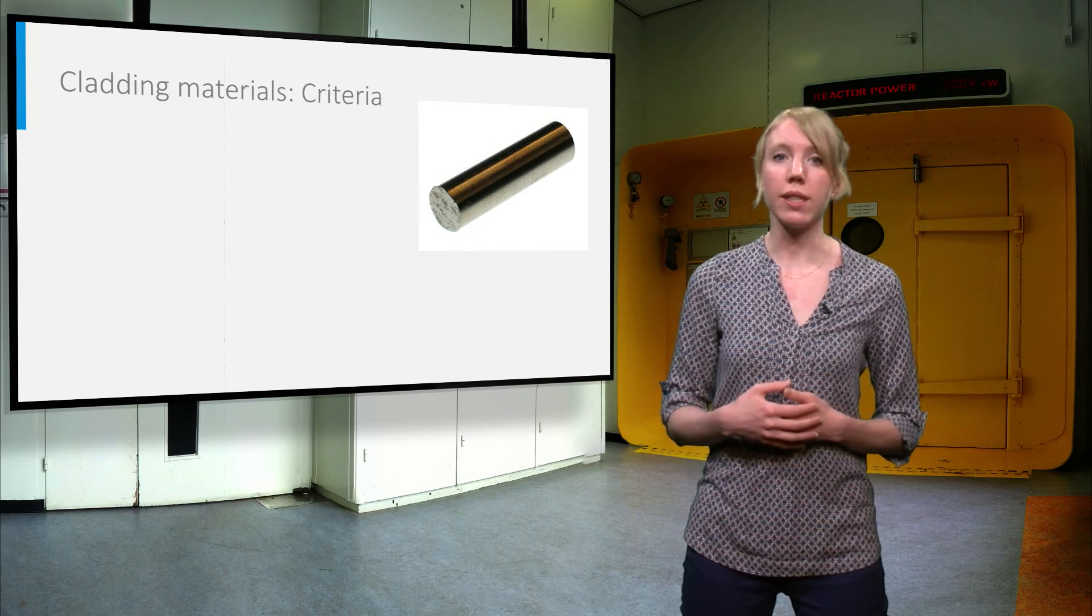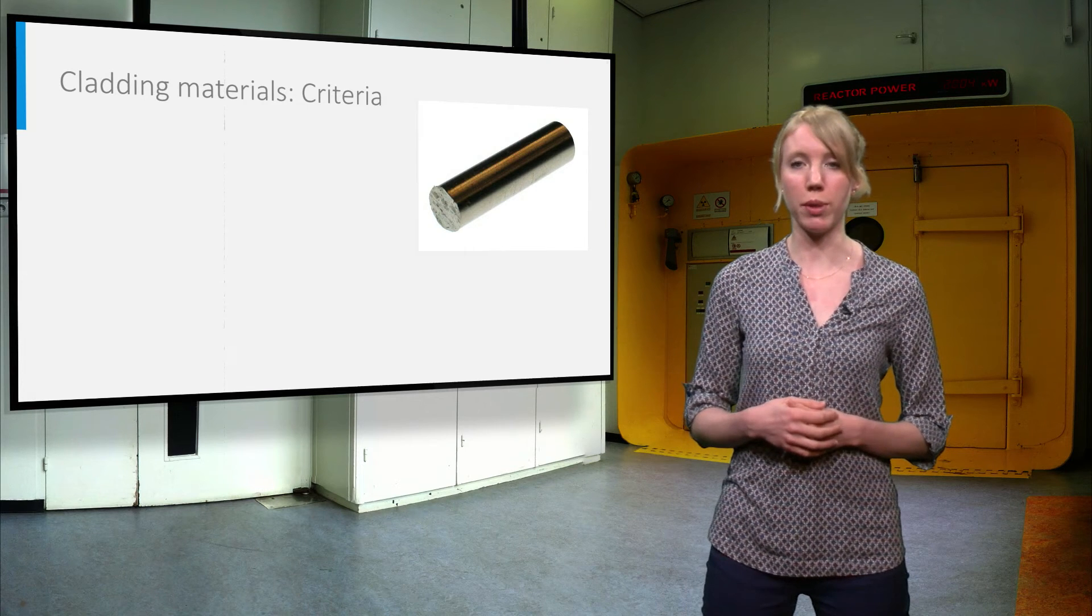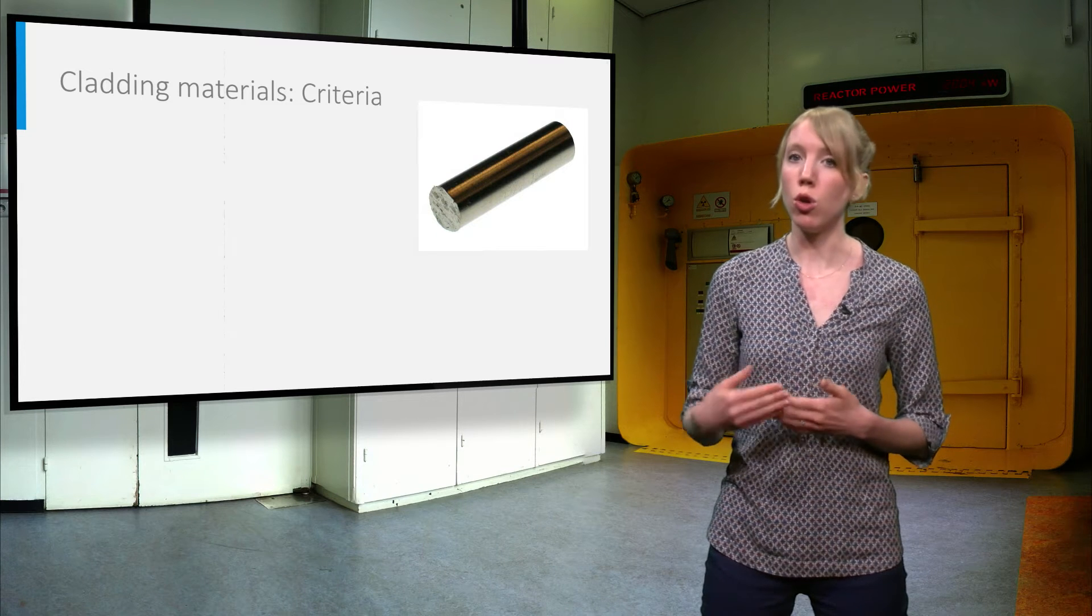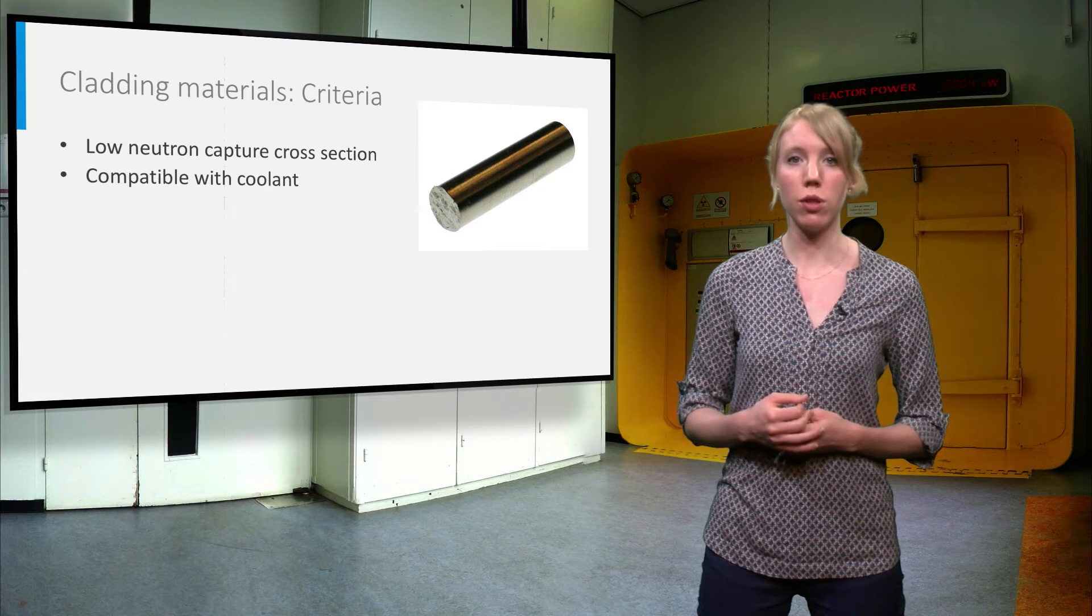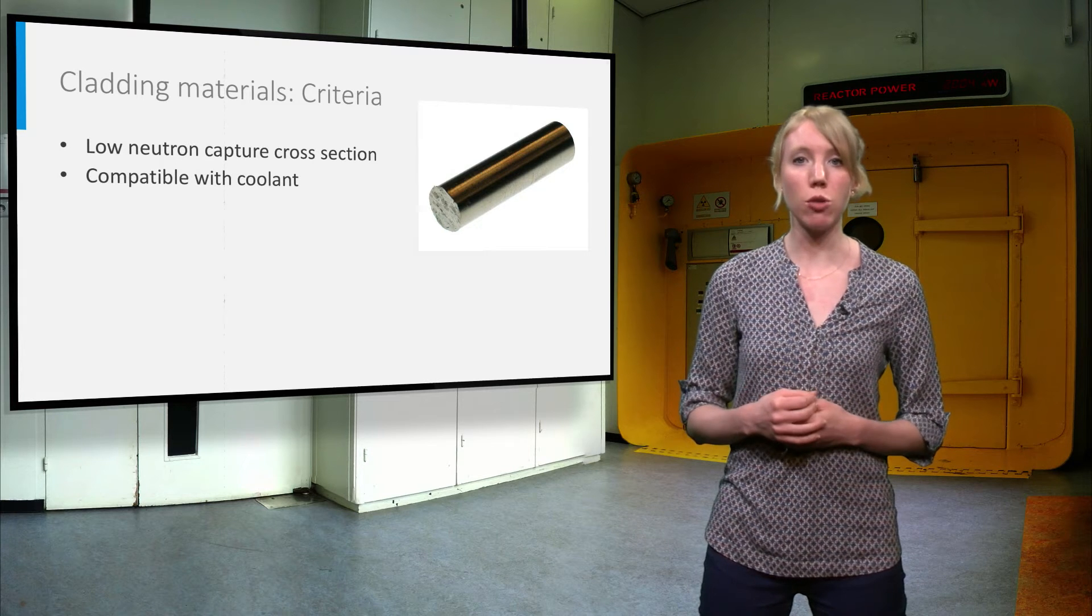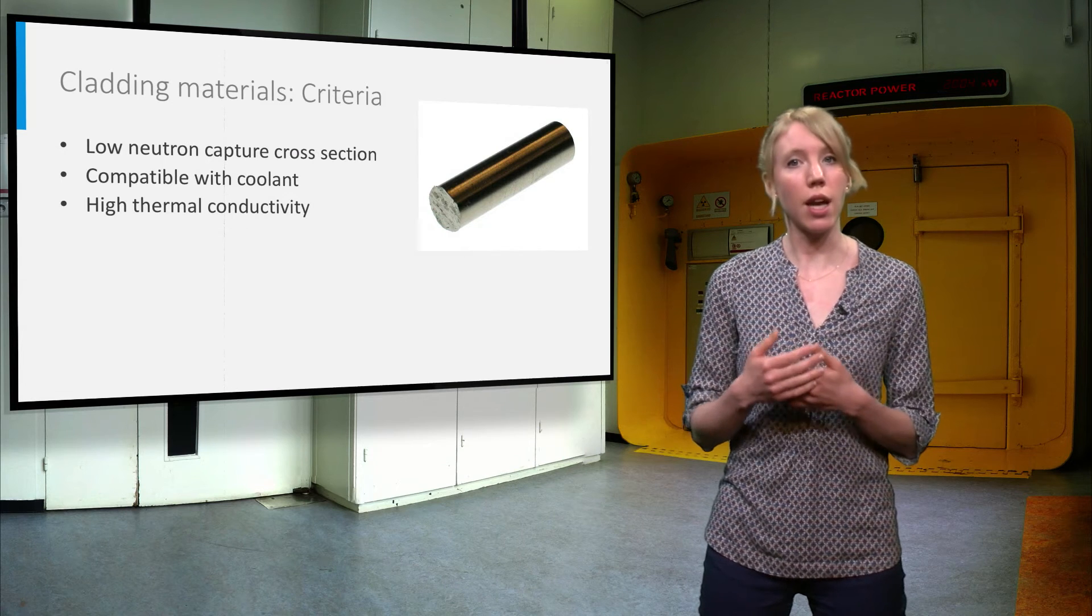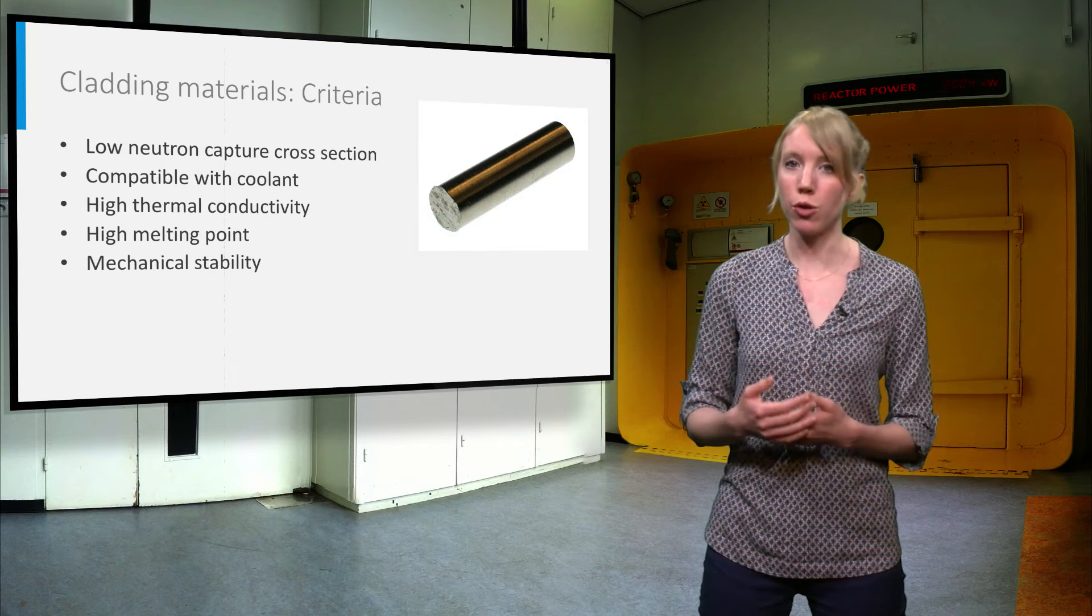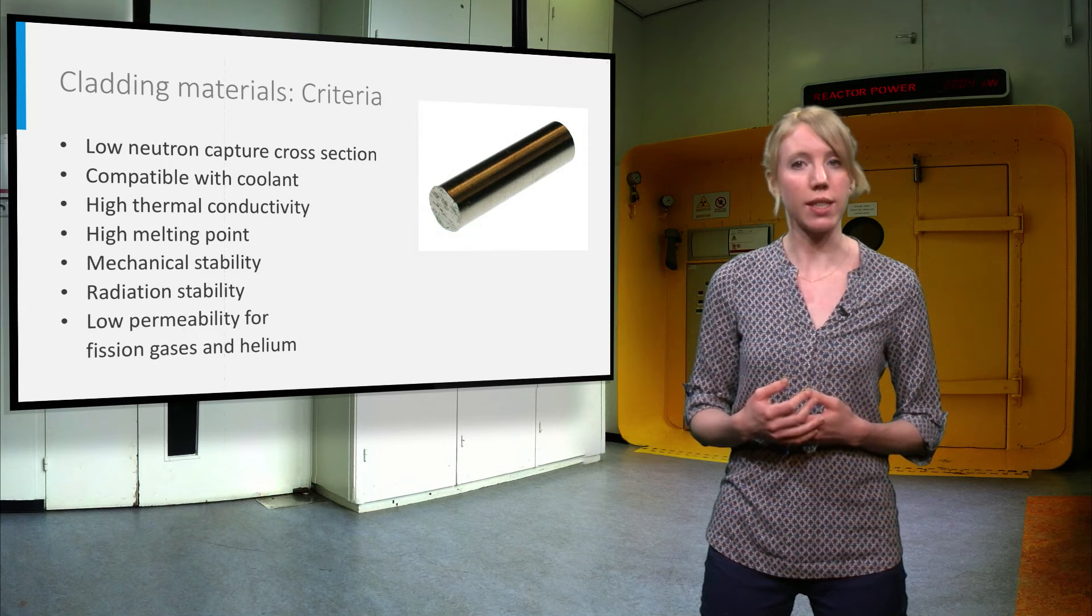The cladding material must meet several criteria with respect to its nuclear and material properties. Its constituting elements must have low neutron capture cross sections, it must be compatible with the coolant, have favorable physical properties, especially high thermal conductivity and high melting point, good mechanical stability, good radiation stability, and low permeability for fission gases and helium.